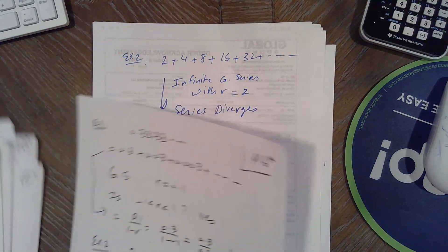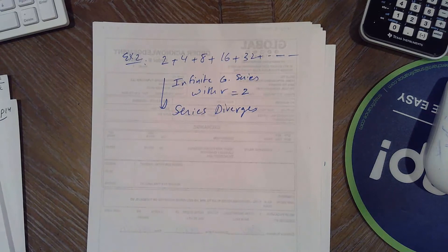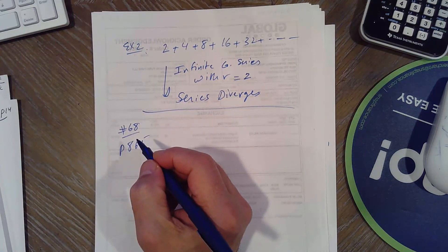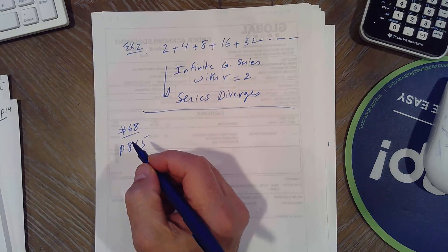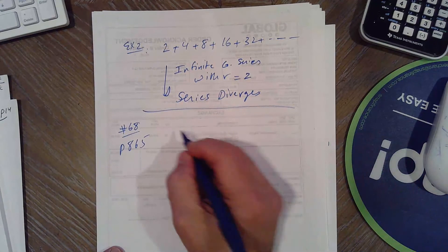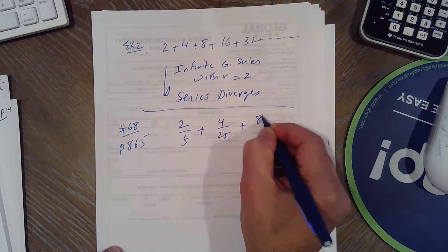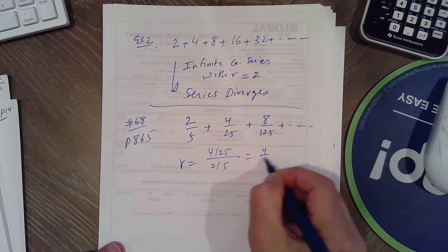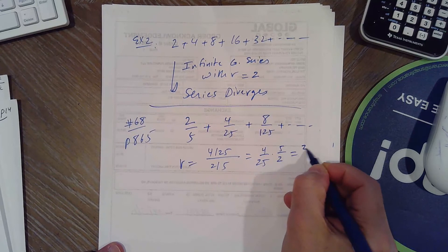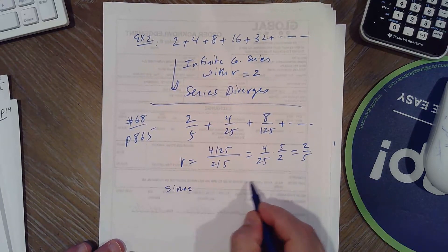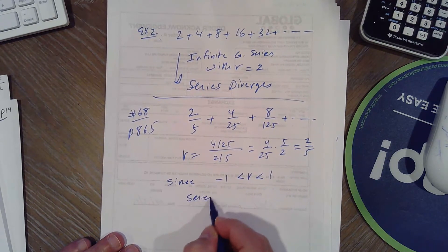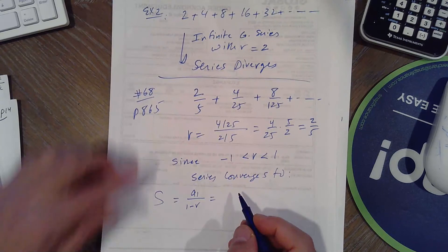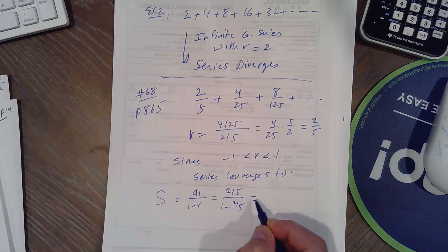Problem 68, page 865: determine if the infinite geometric series converges or diverges; if it converges, find the sum. The series is 2/5 + 4/25 + 8/125 + ... The common ratio is (4/25)/(2/5) = 2/5. Since r = 2/5 is between -1 and 1, the series converges. The sum is a₁/(1 - r) = (2/5)/(1 - 2/5) = (2/5)/(3/5) = 2/3.